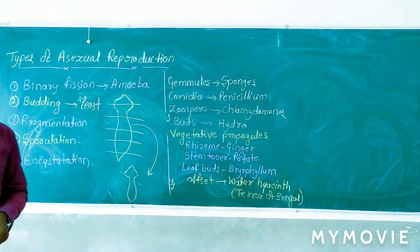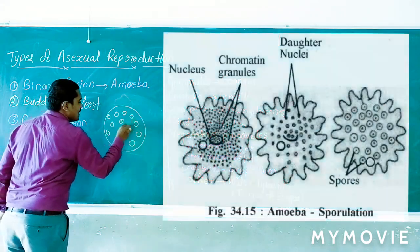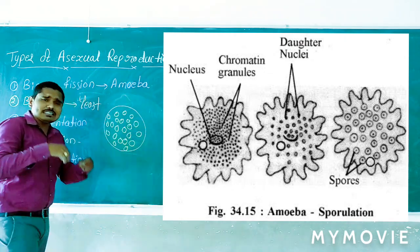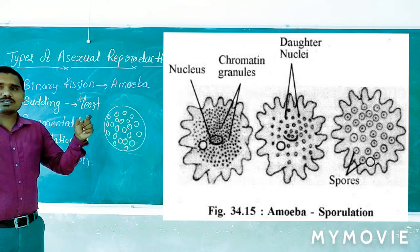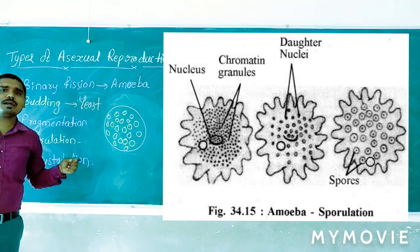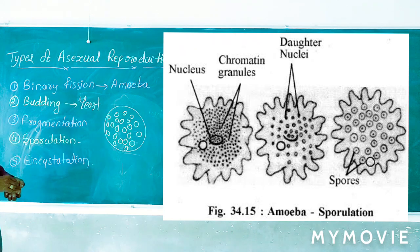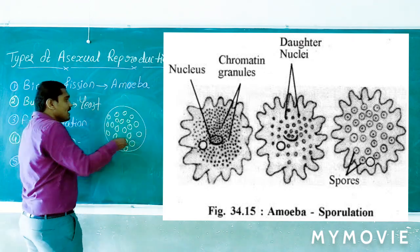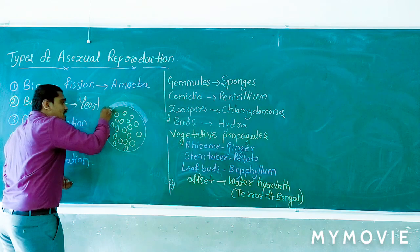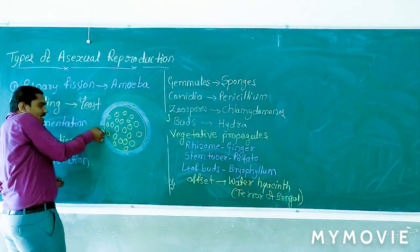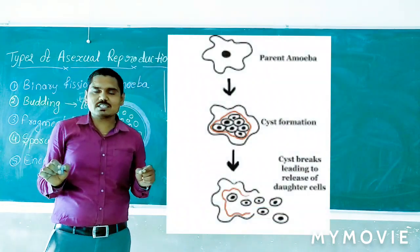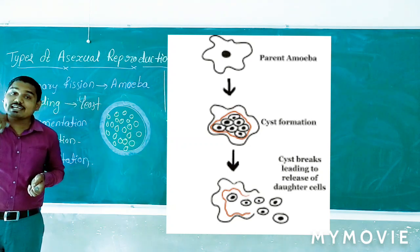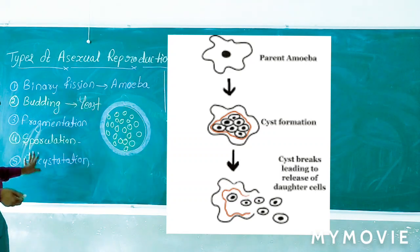The next type is sporulation. In sporulation, spores are formed within a protective cell layer. This process can occur in lower organisms — for example, in Penicillium and Chlamydomonas, which have zoospores. A related important process is encystation. In encystation, the spores are surrounded and protected by a protective cell covering layer — that layer formation is called encystation.